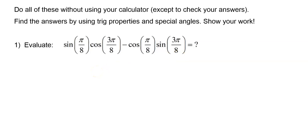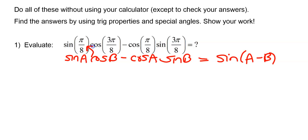Well, it certainly looks so. So it looks like this is sine A cosine B minus cosine A sine B, which means this could be simplified to sine of A minus B. Well, in this case, A would be the angle pi over 8 and B would be the angle 3 pi over 8.